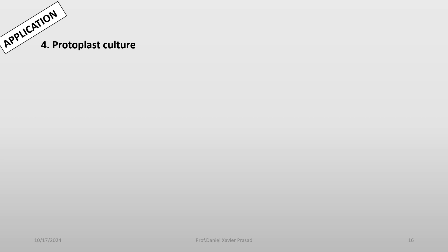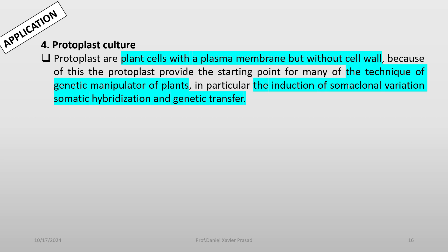Protoplast culture is another application, which we have already seen in the last class. Protoplast isolation plays a major role through mechanical and enzymatic isolation. Protoplasts are plant cells with a plasma membrane but without a cell wall. Because of this, protoplasts provide the starting point for many techniques of genetic manipulation of plants — in particular, the induction of somatic clonal variation, somatic hybridization, and genetic transfer. They are cultivated in liquid as well as on solid media.